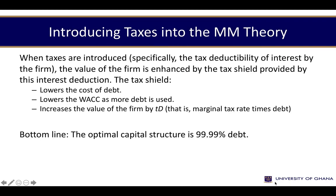Once we introduce taxes into the MM theory, we get the tax shield — the benefits of using debt. The tax deductibility of interest means we get some savings from the use of debt. This tax shield lowers the cost of debt inherently and also lowers the weighted average cost of capital as more debt is used, increasing the value of the firm by the amount of the tax shield. The more debt you use, the more tax shield you generate, and that tax shield adds to the value of the firm. According to MM with the tax adjustment, optimal capital structure could theoretically go as far as 99.99%.